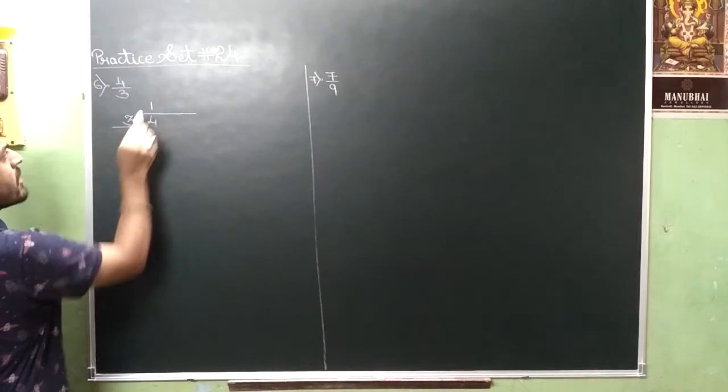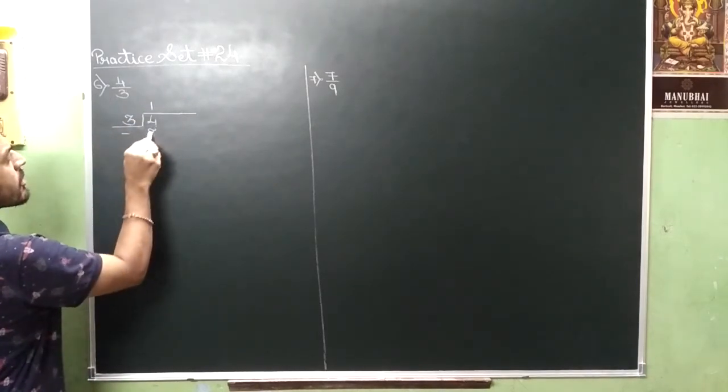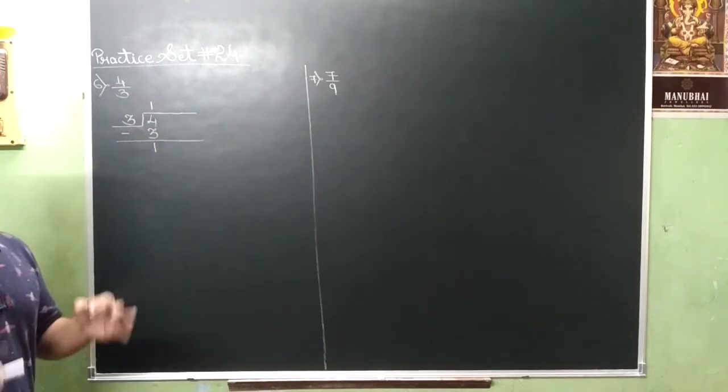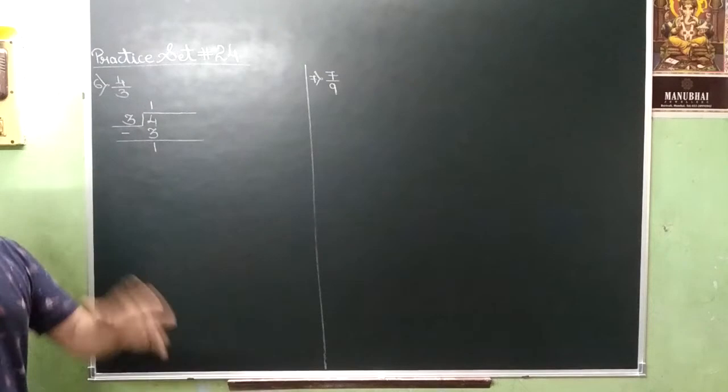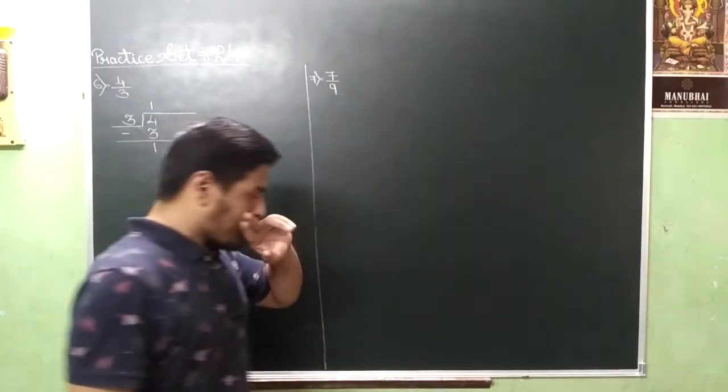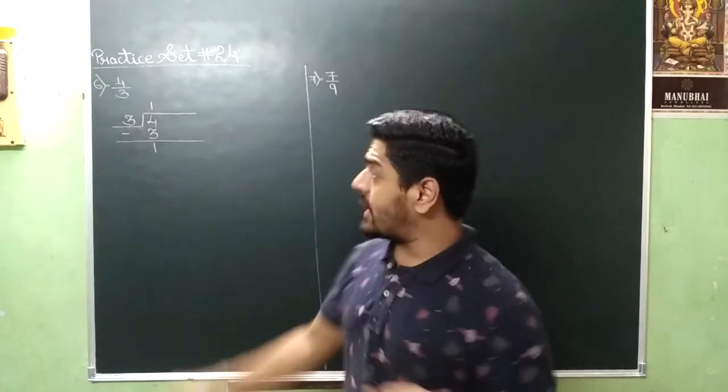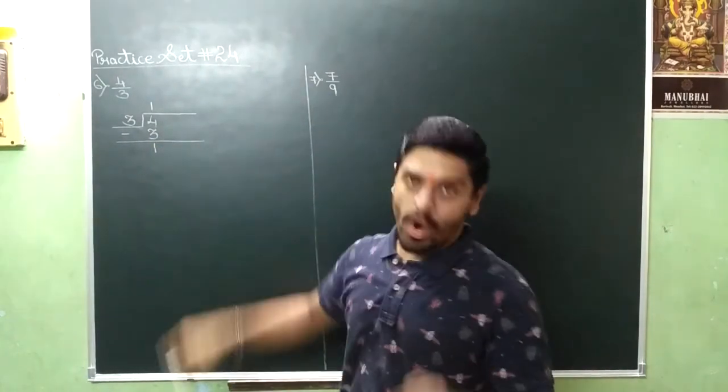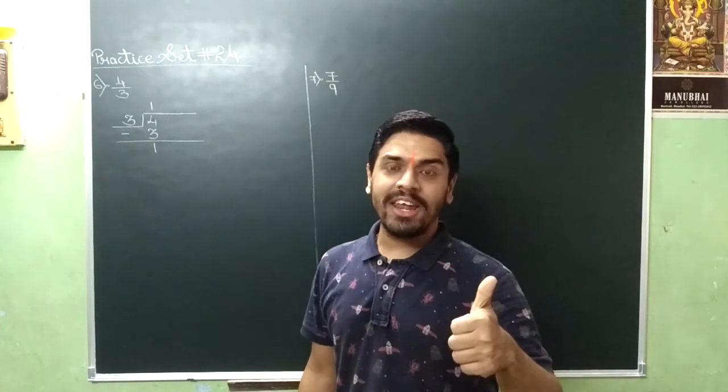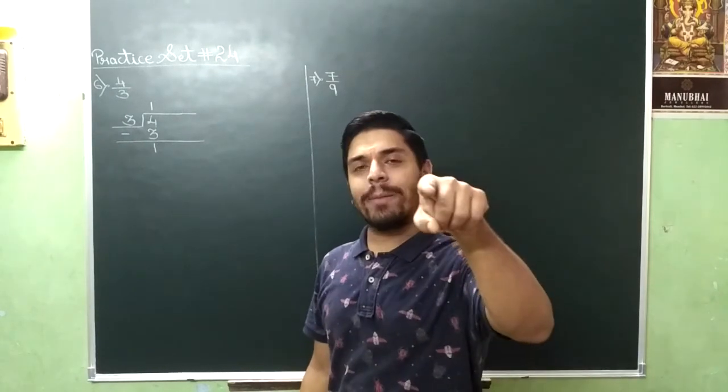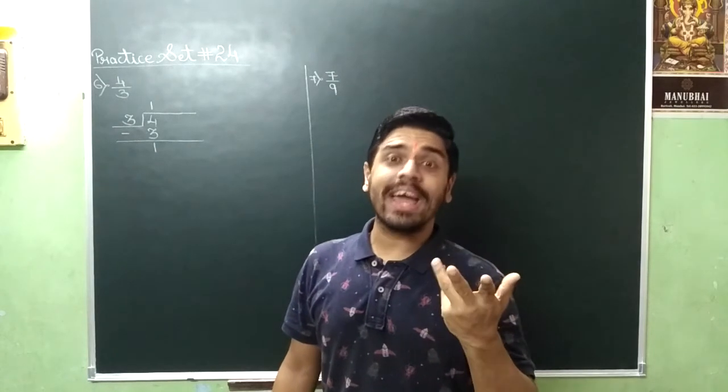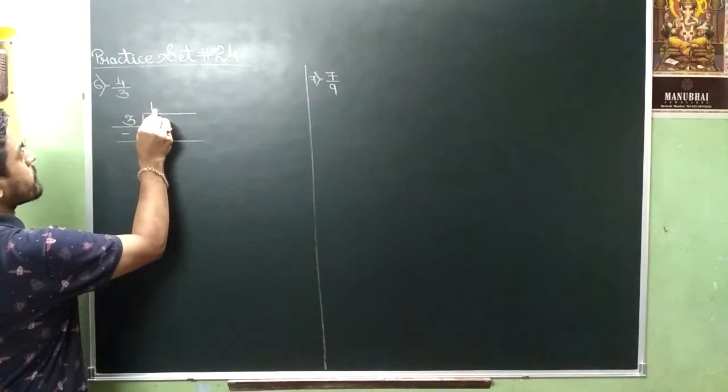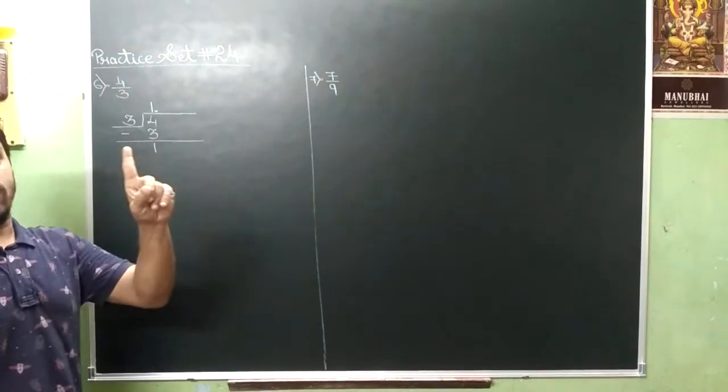Three, one sum minus three. Remainder will be one. Clear? Now two questions we have to ask. First, the first question is, is there any number to be brought down? Answer I have no sir. Do you still have a remainder? Yes sir. Toh kya karna hai? Apply a decimal point and take only one zero.